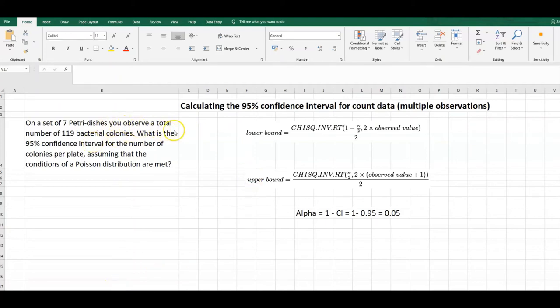In this example, we are required to calculate the 95% confidence interval for some count data, and we've got multiple observations.